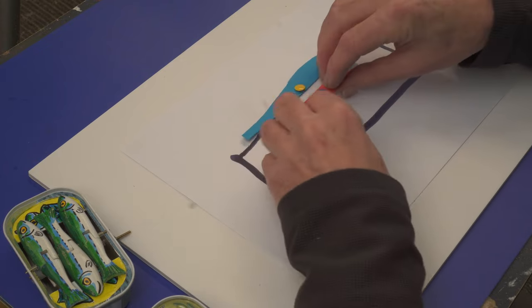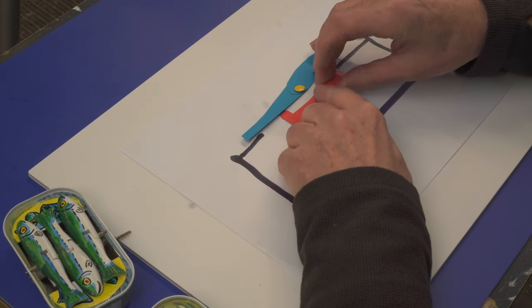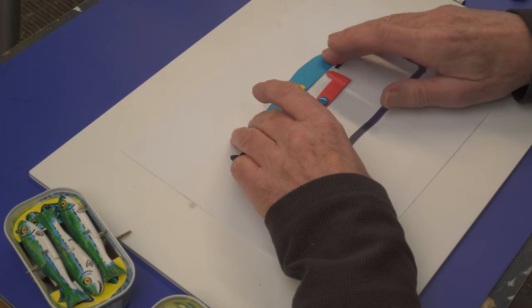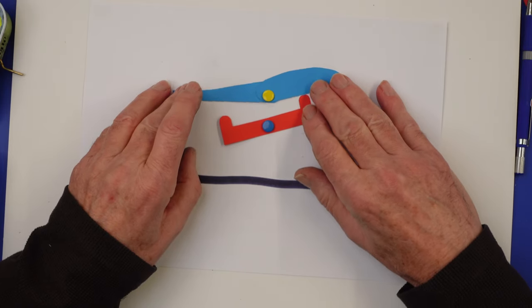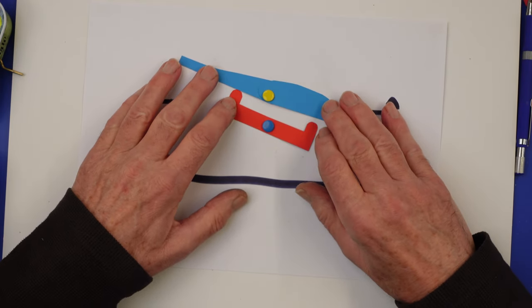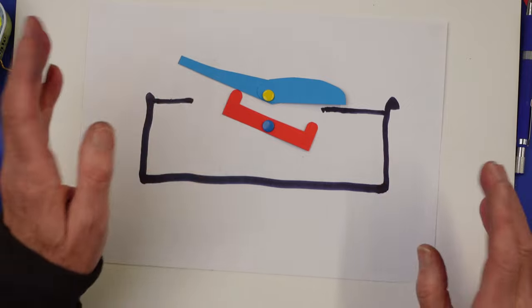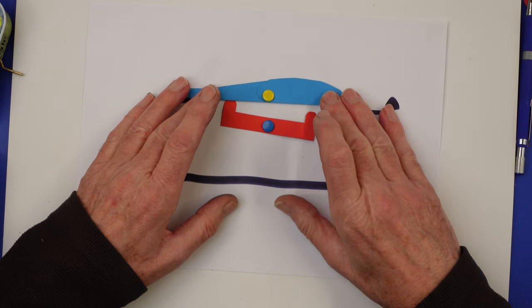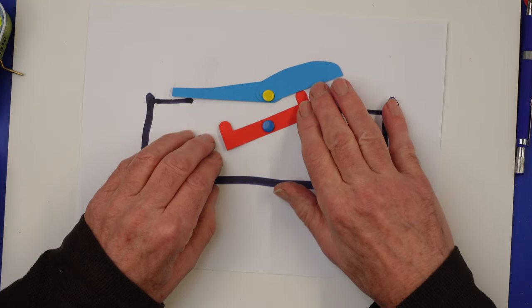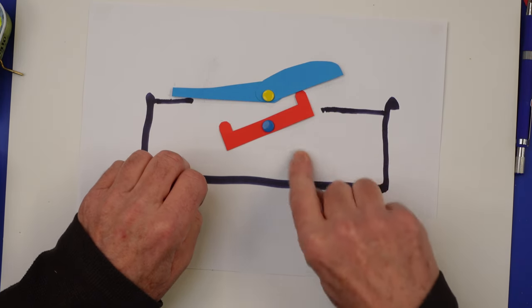The solution I thought of is to put a cam follower underneath. This has got the advantage that it can push up and push that side up, or it can push up and push the other side up. Now we have another problem - we're only pushing on one side now with the cam.